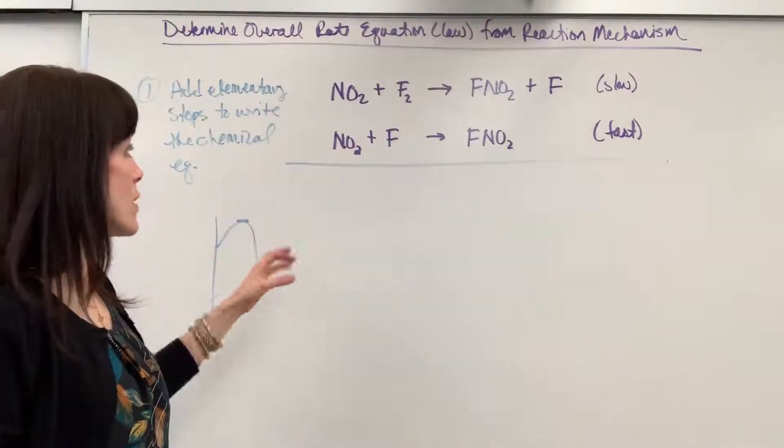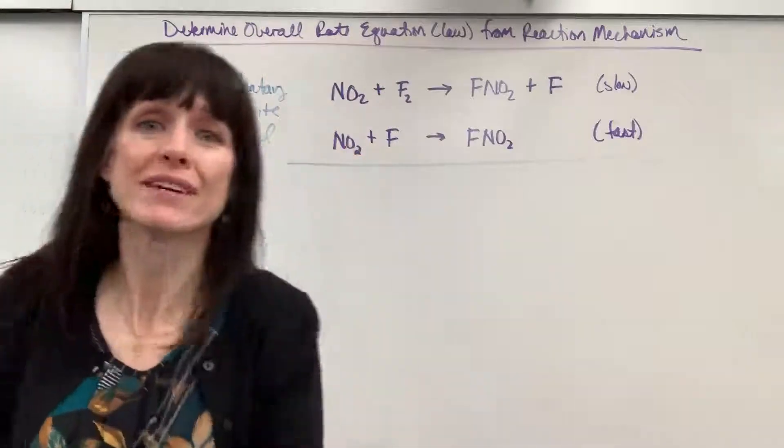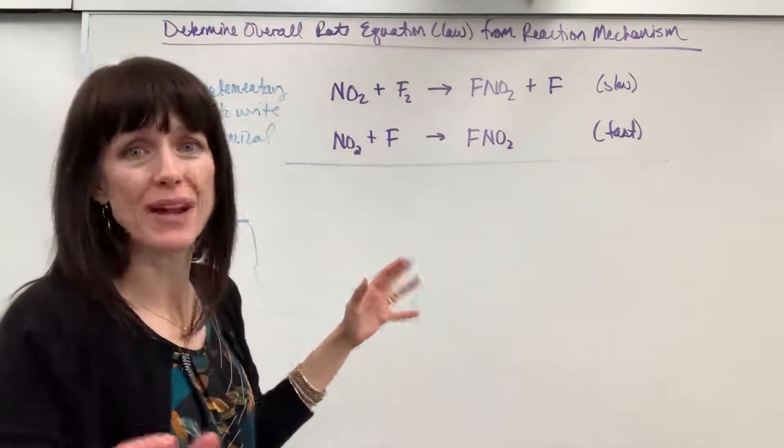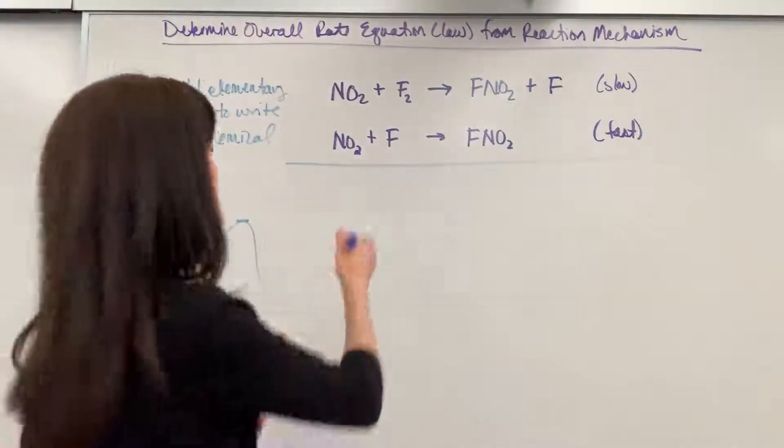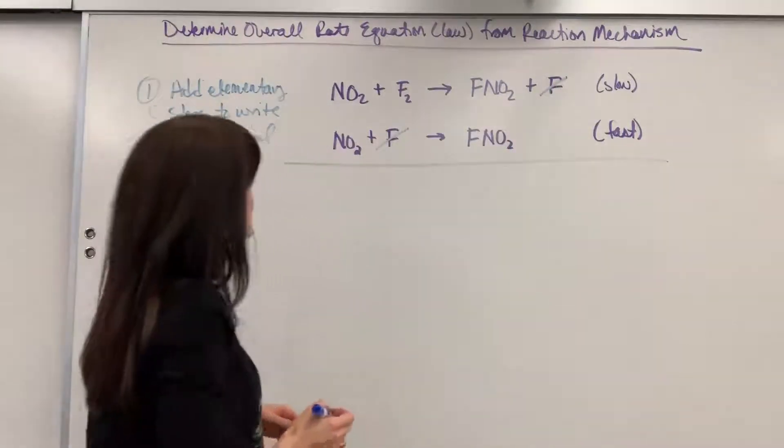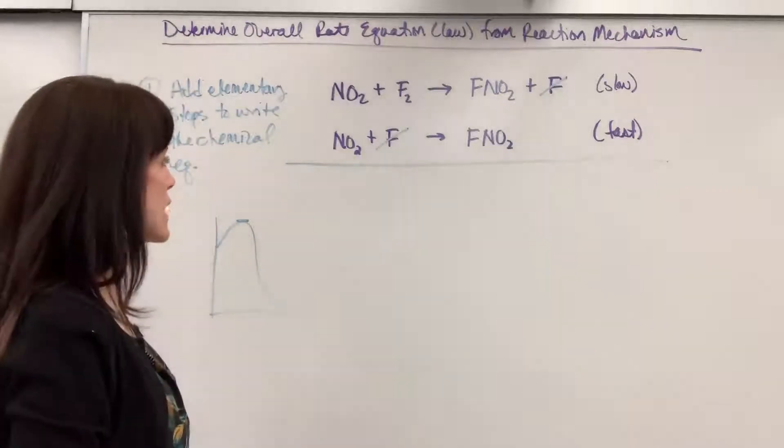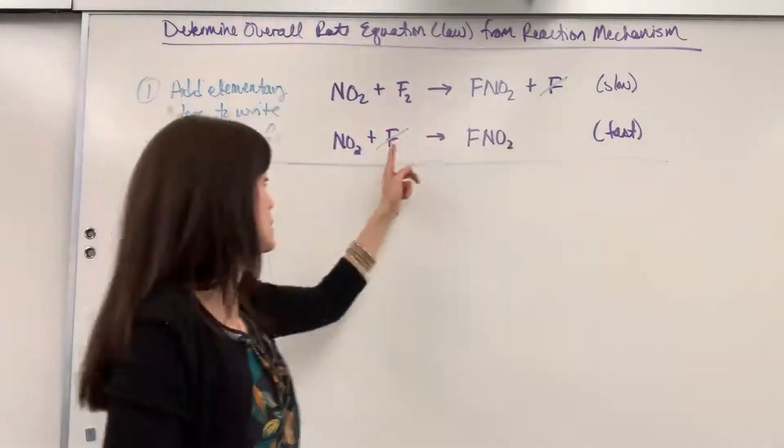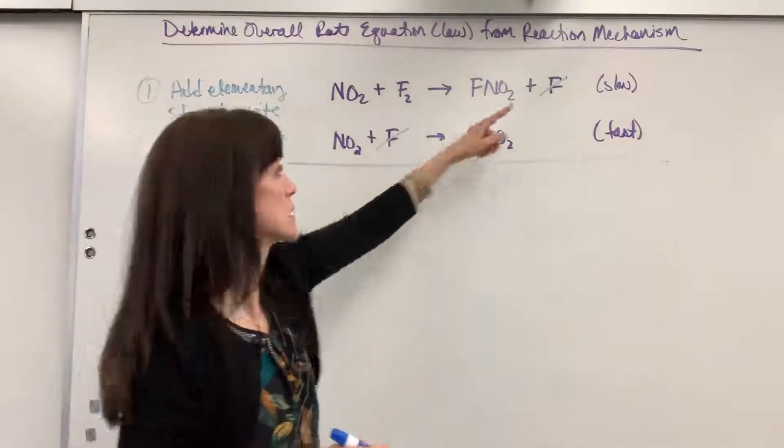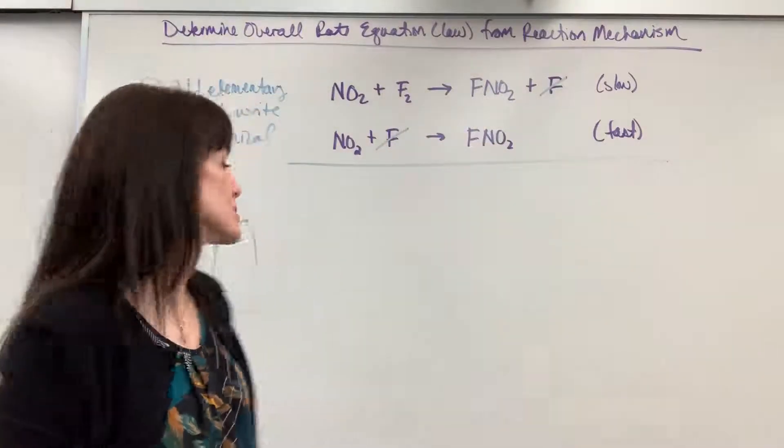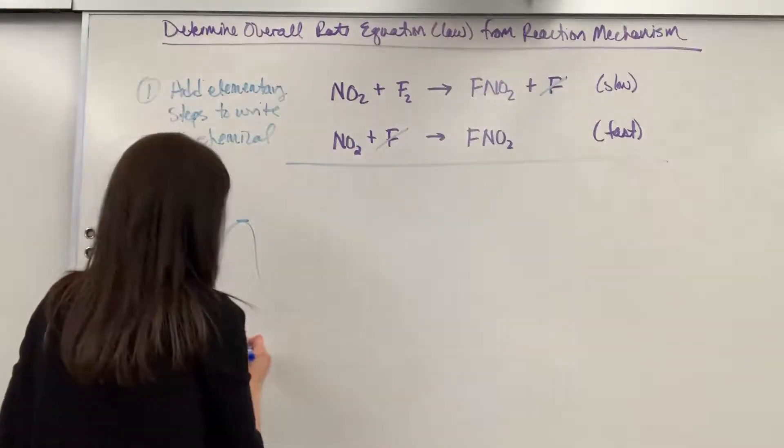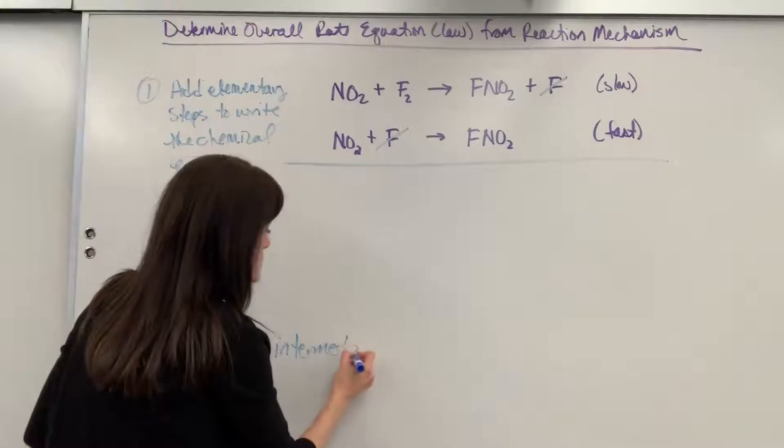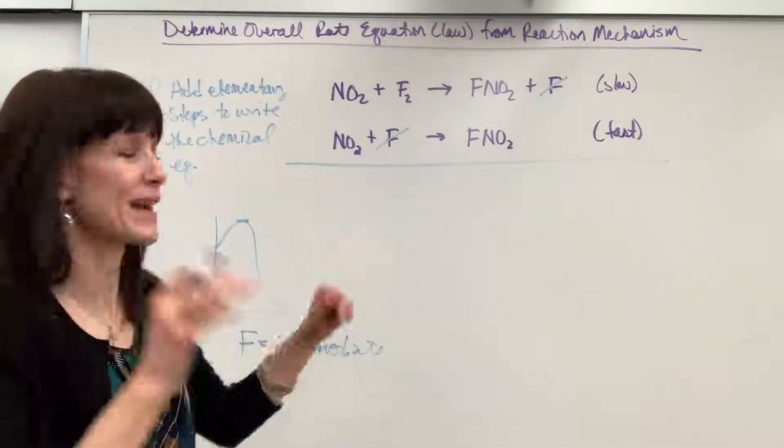Okay, so when we add these together, it will give us the true chemical reaction. Let's see if there's anything the same on both reactant and product side that will cancel. I see F, that will cancel. Doesn't look like anything else will cancel. Now notice, this fluorine was a product, it then became a reactant, it was consumed, cancels out. That is called an intermediate. Fluorine is an intermediate. It's something the chemist made up that just came from their brain.